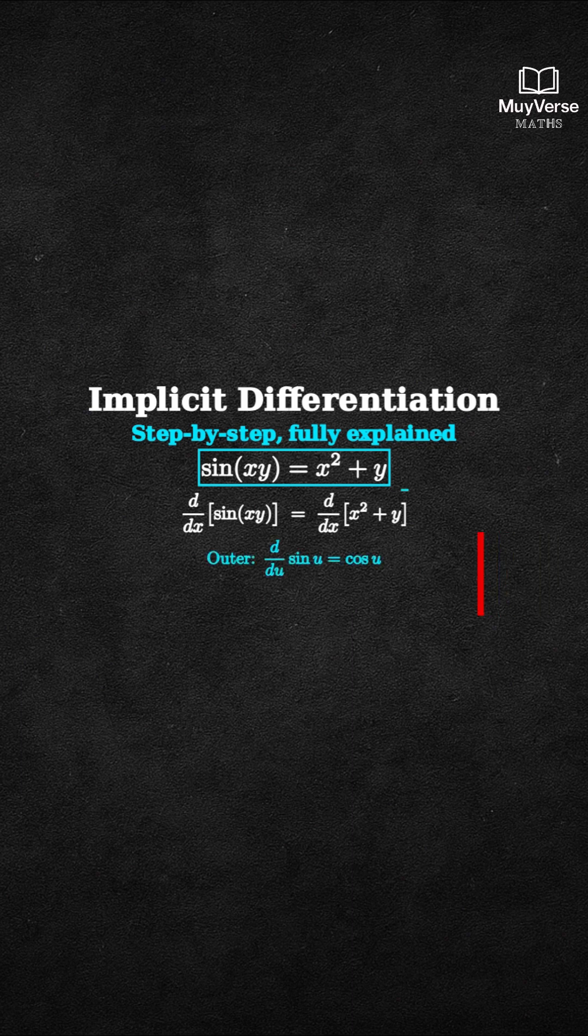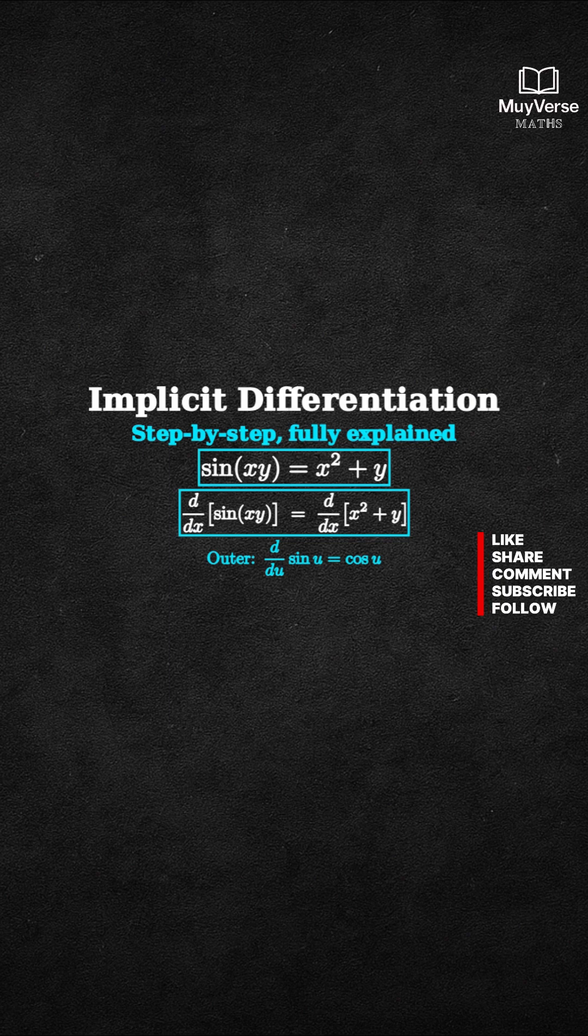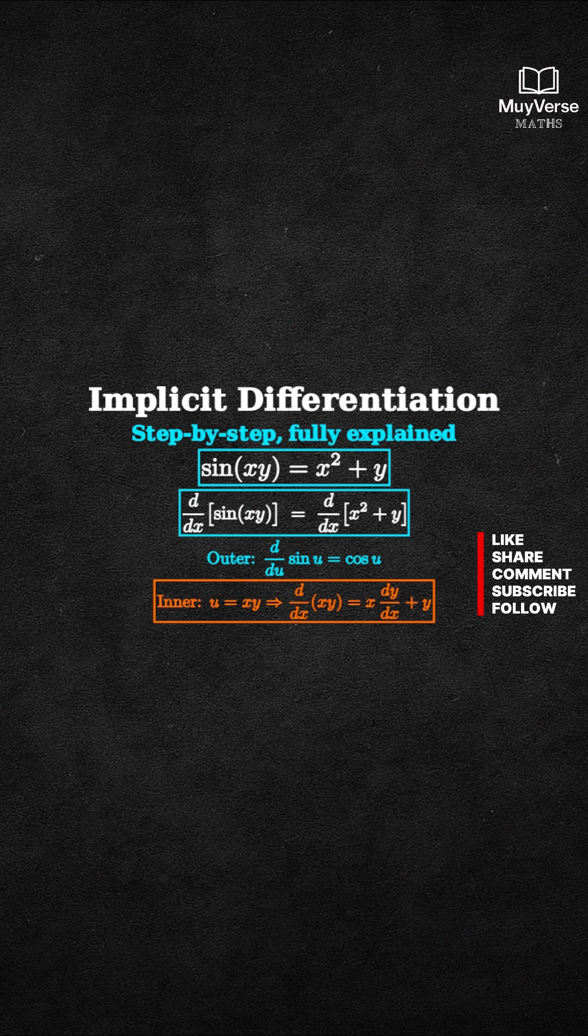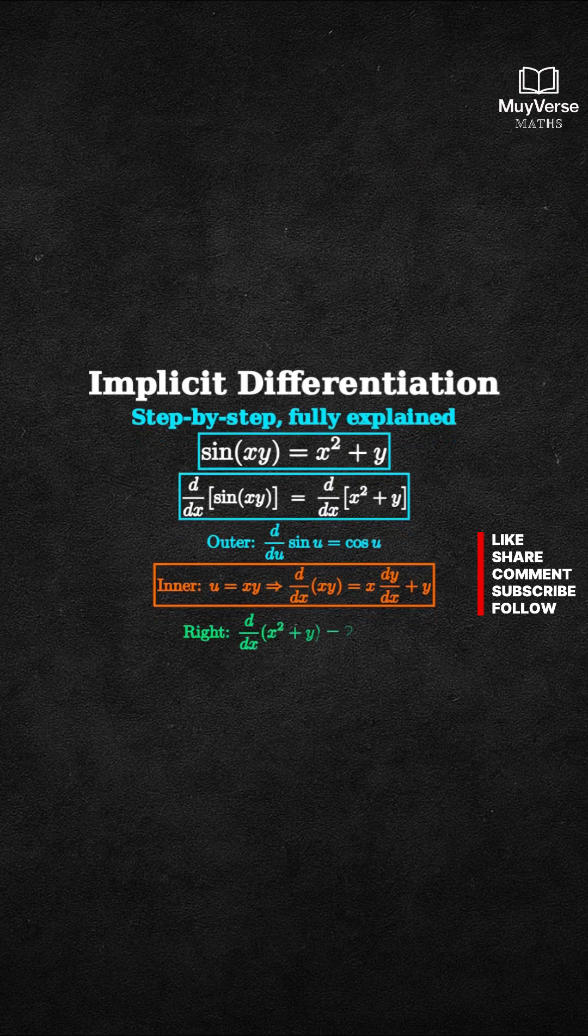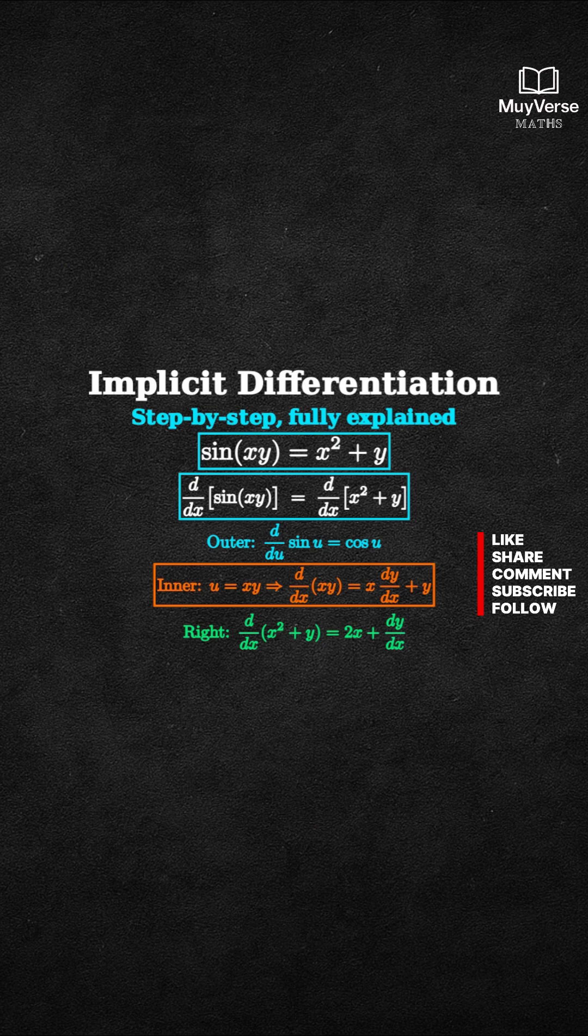For the left side, we use the chain rule. The outer derivative of sine is cosine, and the inner derivative of xy uses the product rule. That's x times dy/dx plus y. The right side is straightforward. The derivative of x squared is 2x, and the derivative of y is dy/dx.